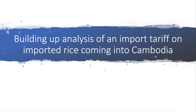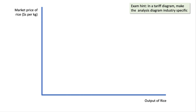So in this video, we're going to build up slide by slide, step by step, an analysis of how an import tariff on imported rice coming into Cambodia is going to work. Really important exam hint: in a tariff diagram, please make your diagram industry specific. Make it really clear — don't just put price and quantity on the y and x axes. Make it clear what it is you're talking about. In this case, we're talking about a tariff on rice affecting the Cambodian rice market.